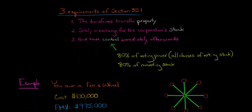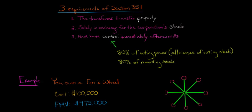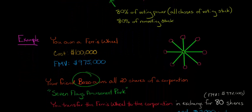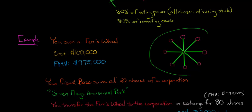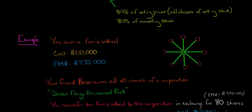Let's jump into an example. Let's say you own a Ferris wheel and the adjusted basis, or the cost of that Ferris wheel, was $100,000, but now the fair market value of the Ferris wheel is $975,000. You have a friend named Bozo the Clown, and Bozo owns 100% — all 20 shares — of a corporation called Seven Flags Amusement Park. You're going to transfer your Ferris wheel to the corporation, and Seven Flags is going to give you 80 shares of common voting stock with a fair market value of $972,000.